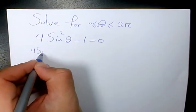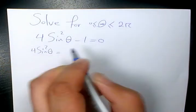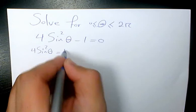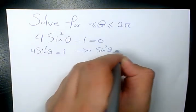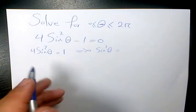So we have 4 sine squared theta. I bring this negative 1 to the right side, it's going to be 1. Therefore, sine squared theta will be, when you divide both sides by 4, it's going to be 1 over 4.